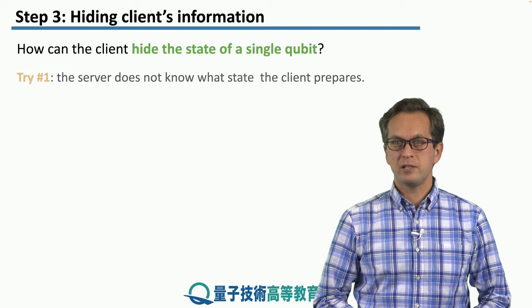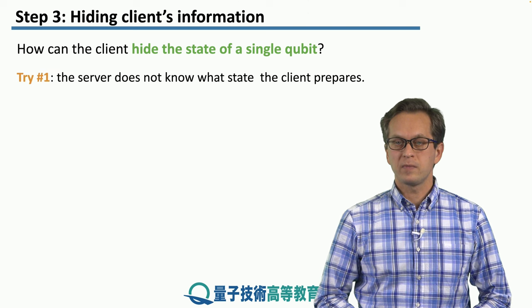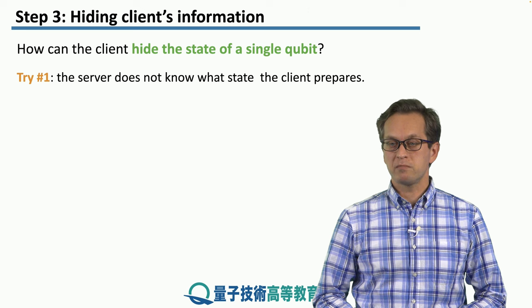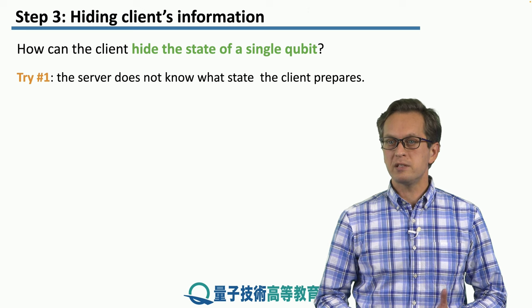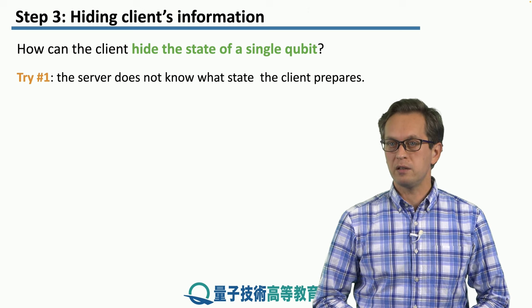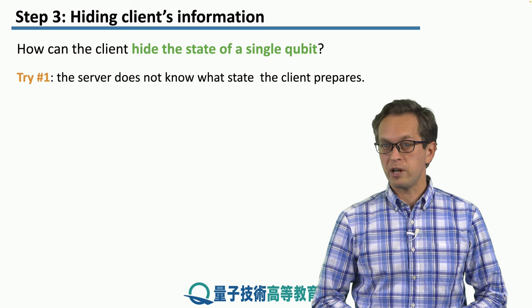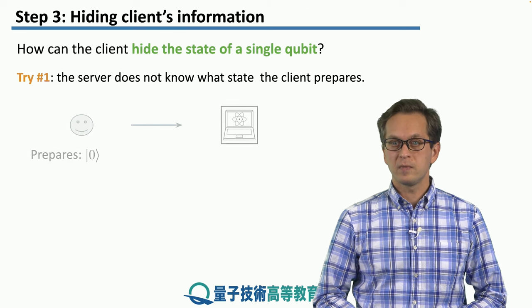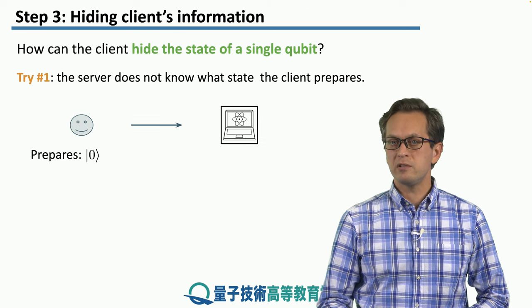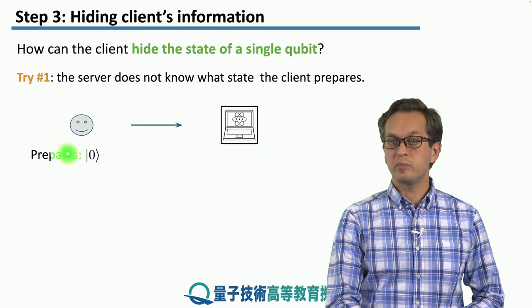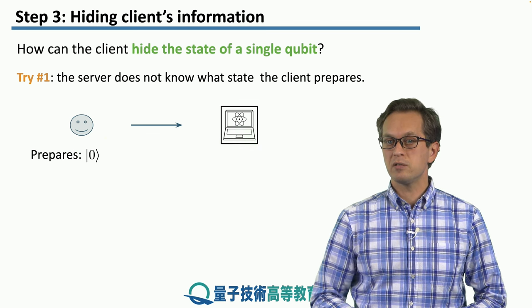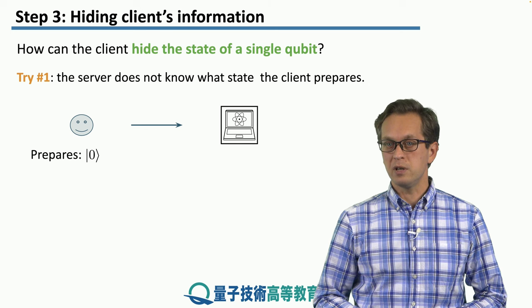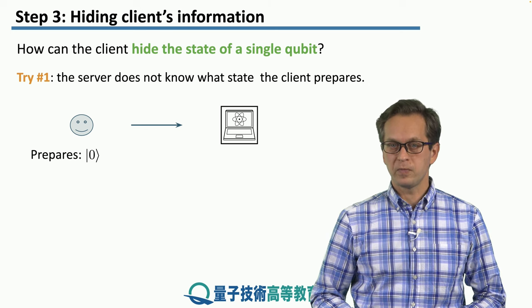Consider the following scenario. The server does not know what state the client prepares. So maybe this is enough for the client to hide the information that they are trying to communicate to the server. We're considering the setting where the client prepares a state and sends it to the server, either directly or via teleportation. That's not really important for now.